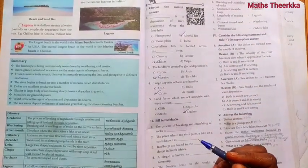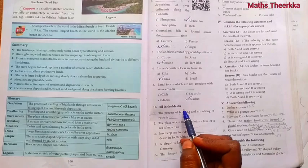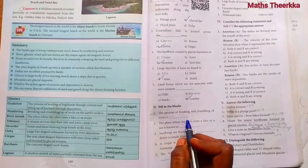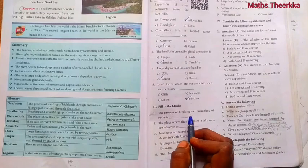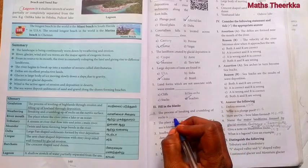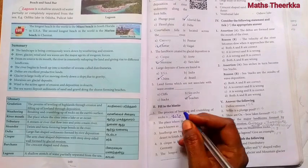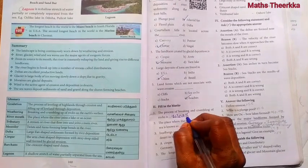Second roman, fill in the blanks. First one, the process of breaking and crumbling of rock is called weathering.